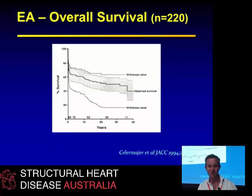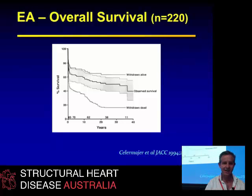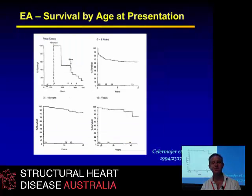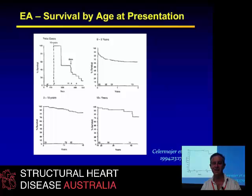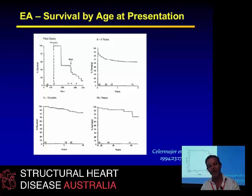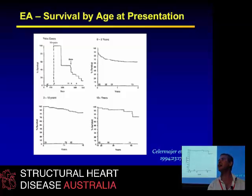This is the overall survival if you take all comers — the largest series yet published from Great Ormond Street in London. Divide it up into groups: fetal diagnosis has a terrible outcome. If diagnosed at zero to two years old, there's a 60% mortality by age two. If diagnosed between two and 18, there's an 85% 18-year survival. And if diagnosed when more than 18, there's about an 85% 35-year survival. So it's very dependent on the age of diagnosis.